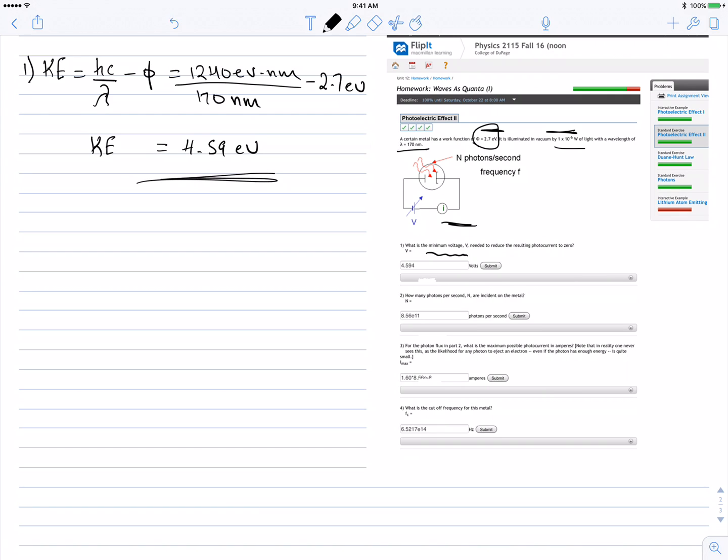So this is the minimum voltage to stop the current from going all the way. Number two: how many photons per second are incident on the metal?